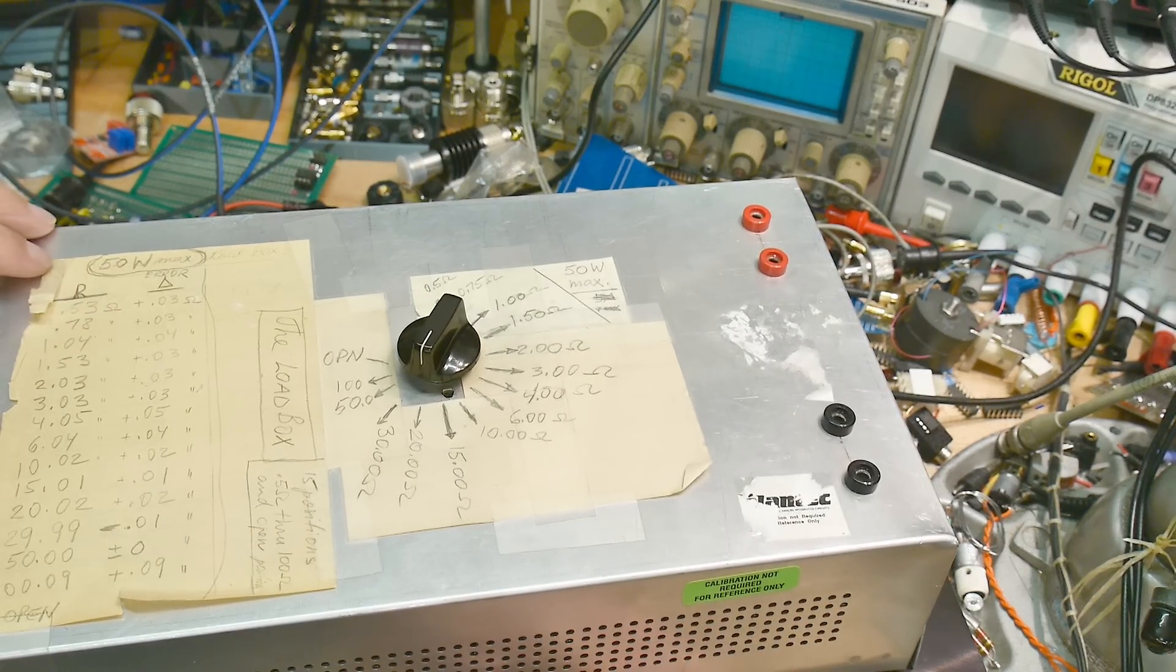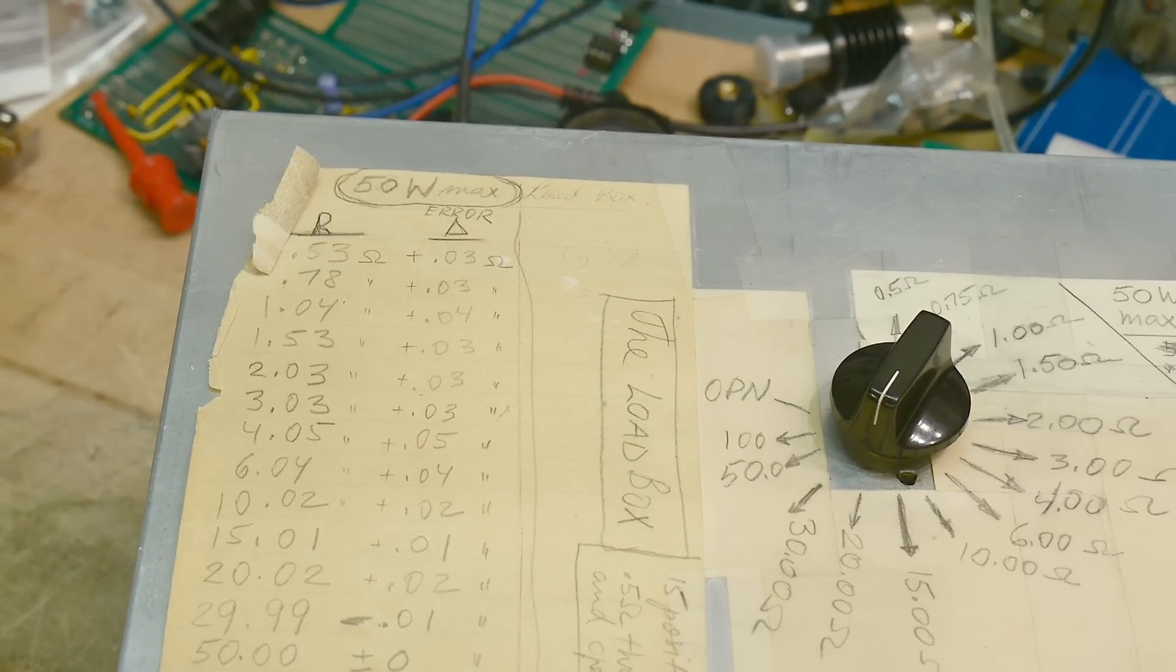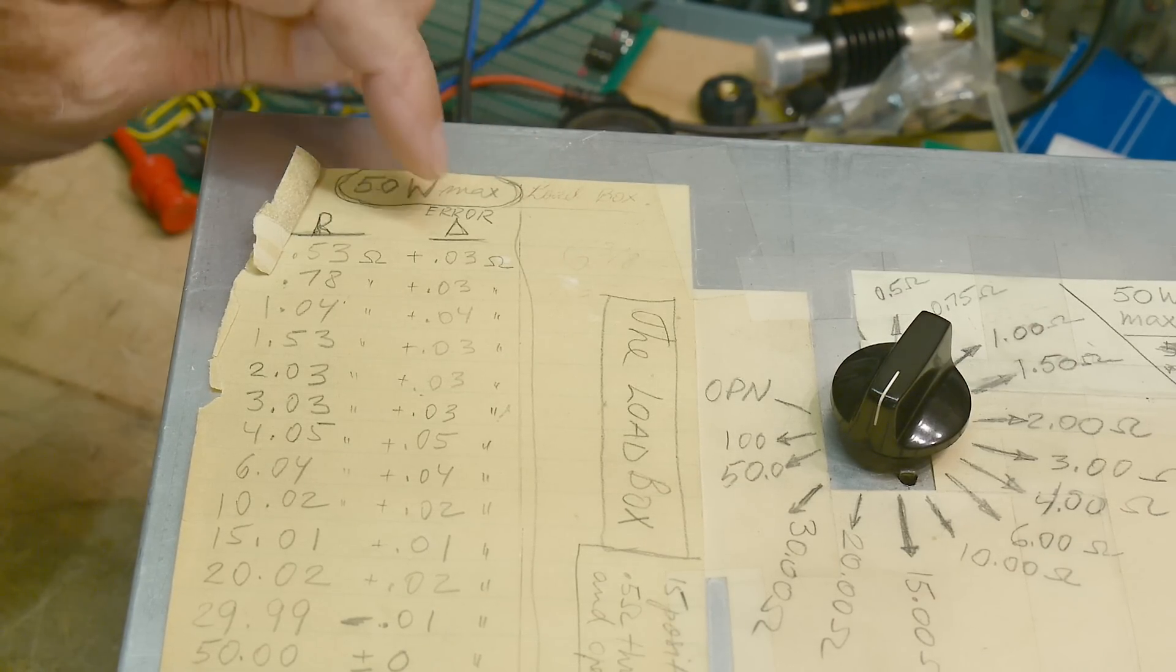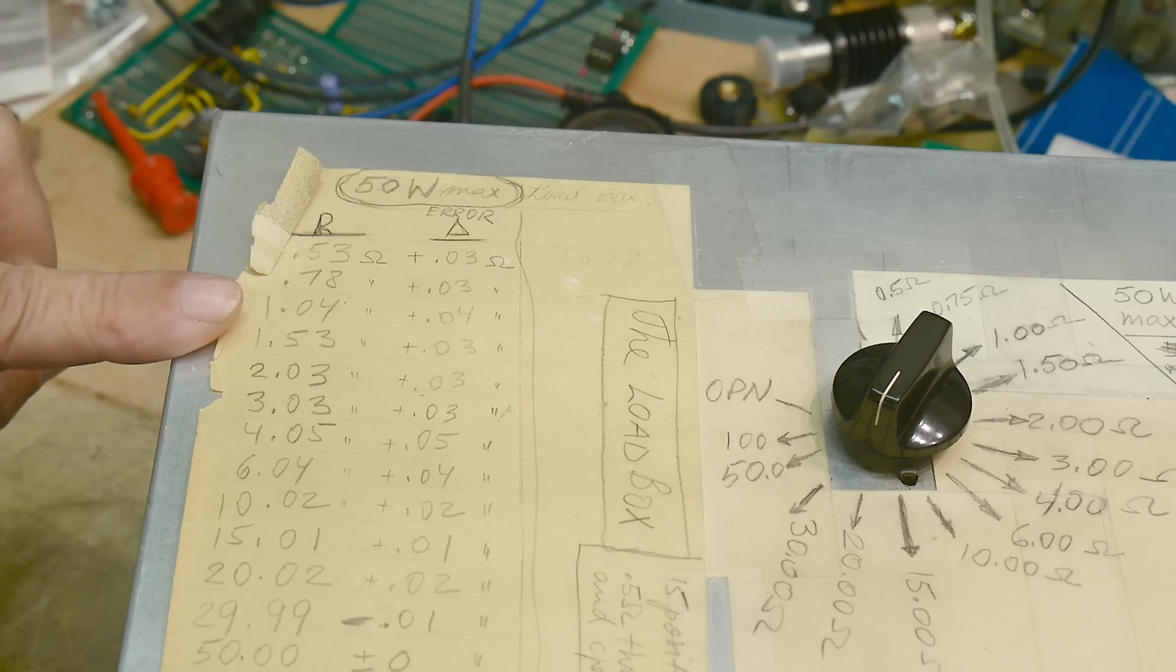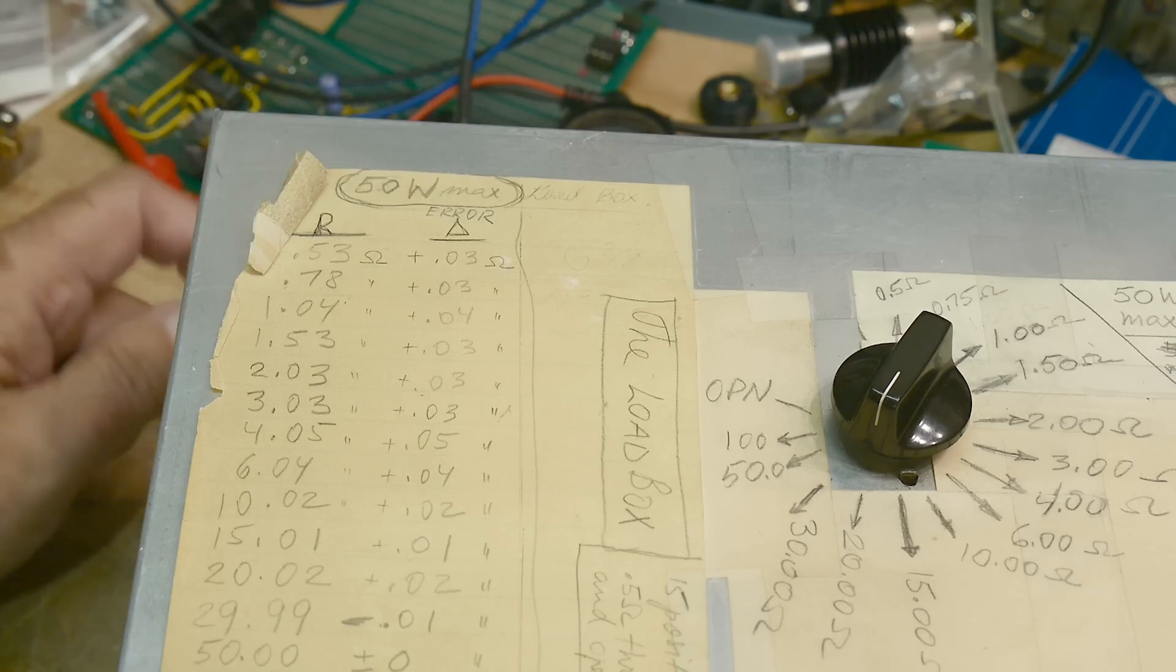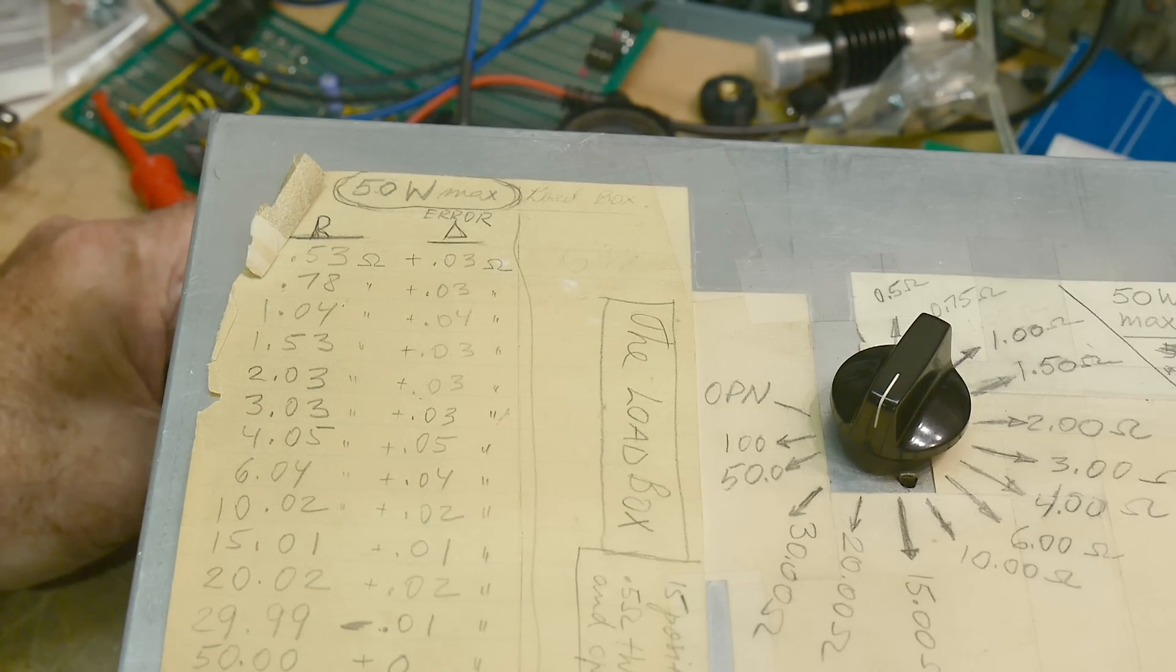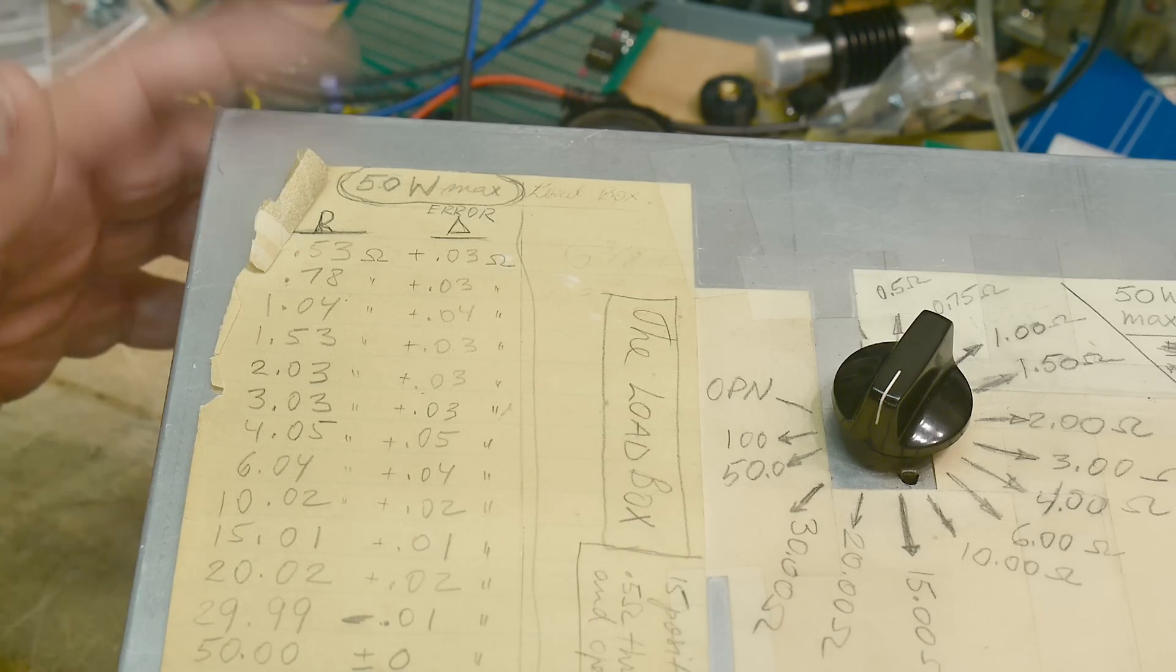So over here, can you read this, 50 watt max. Here's the resistors, and here's what their values were, 0.53, 0.78, and then plus 0.03 ohm error. I don't know what that's all about, but this is cool stuff, I like it.